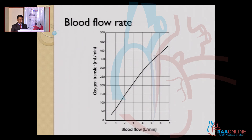This chart shows on its x-axis the blood flow from 0 to 7 litres, and on the y-axis the oxygen transfer in ml per minute. If we increase the blood flow from 1 litre to 7 litres, there is a proportionate increase in oxygen transfer — the cardiac oxygen flux increases. So the fourth parameter that will increase oxygen delivery is the blood flow rate. As we increase the ECMO flows, we will be able to deliver more and more oxygen.